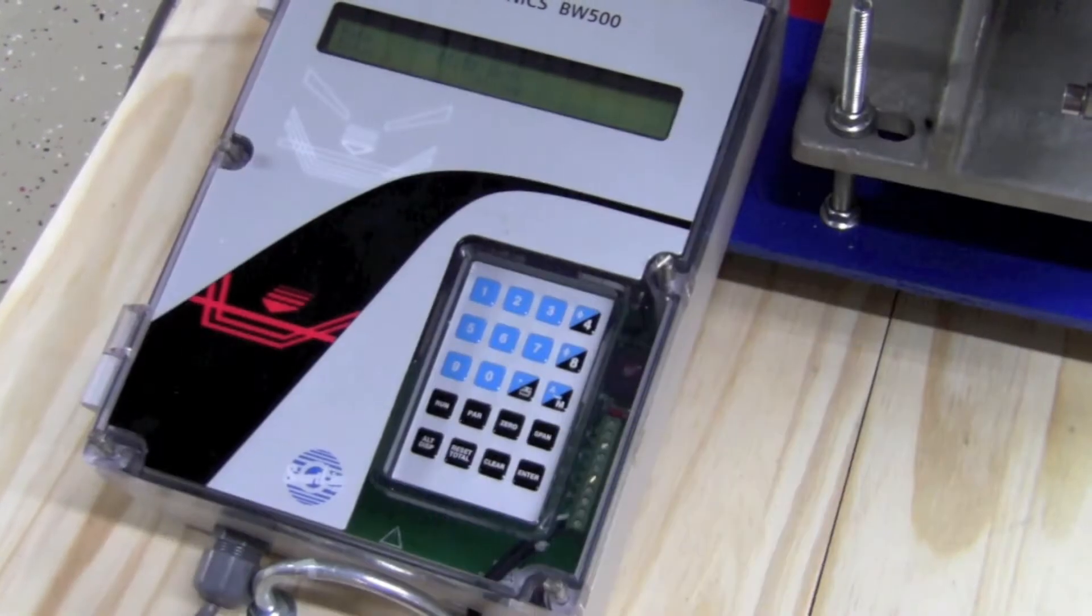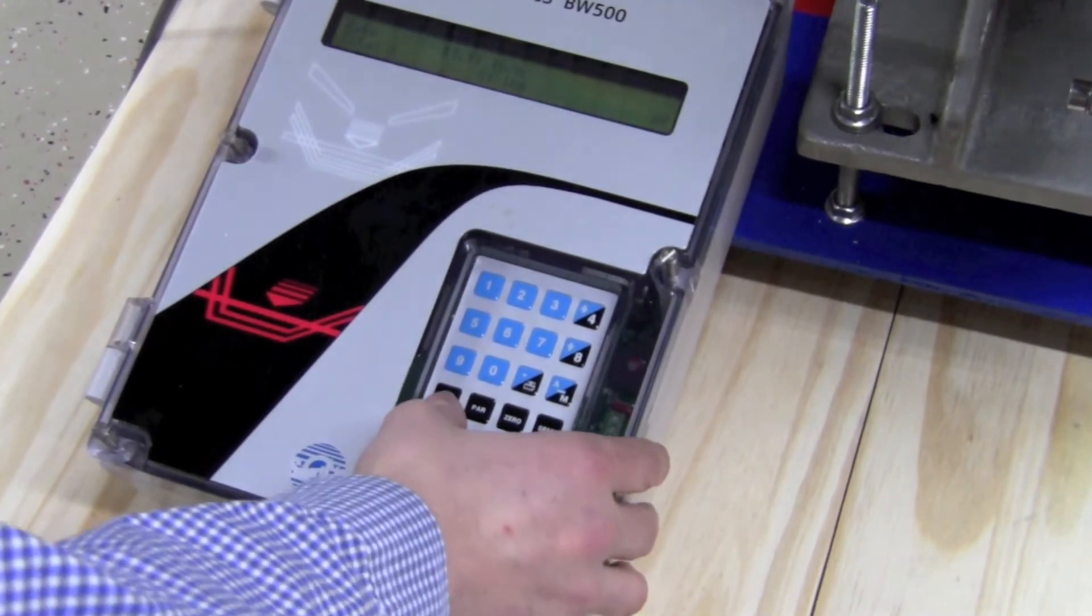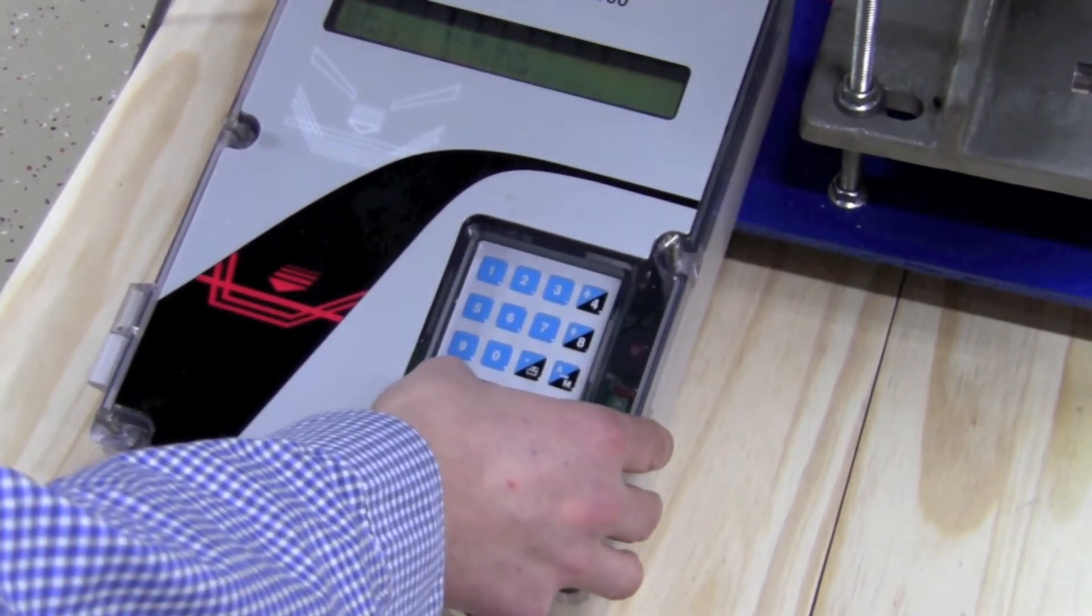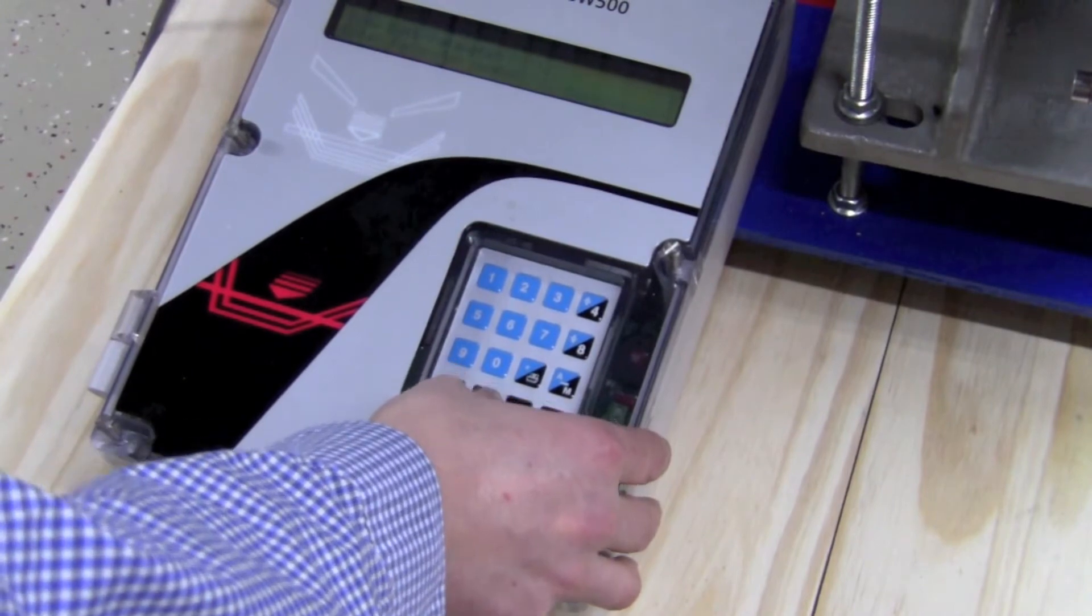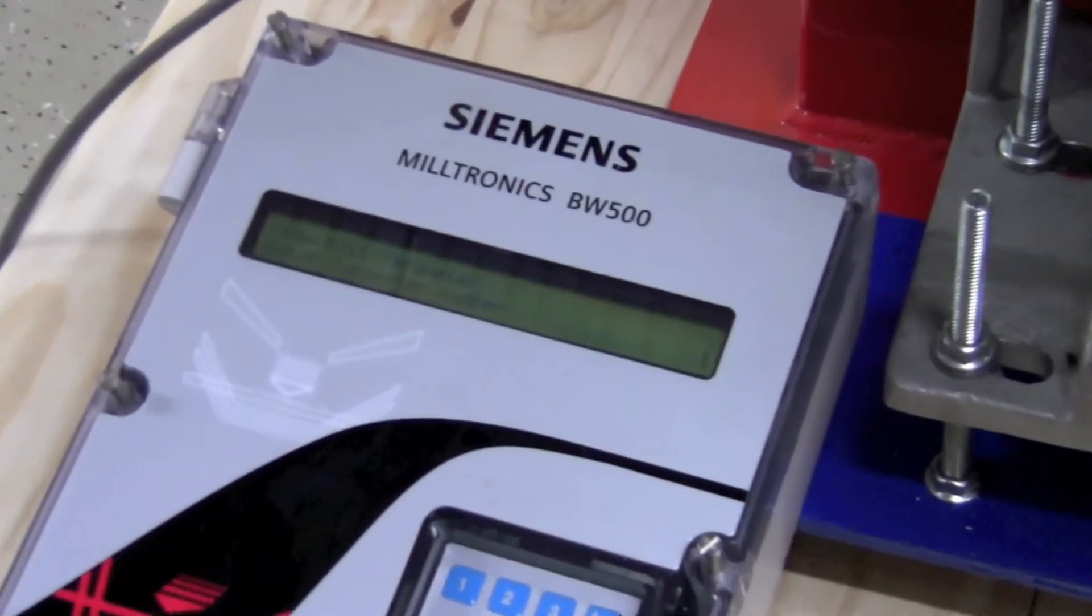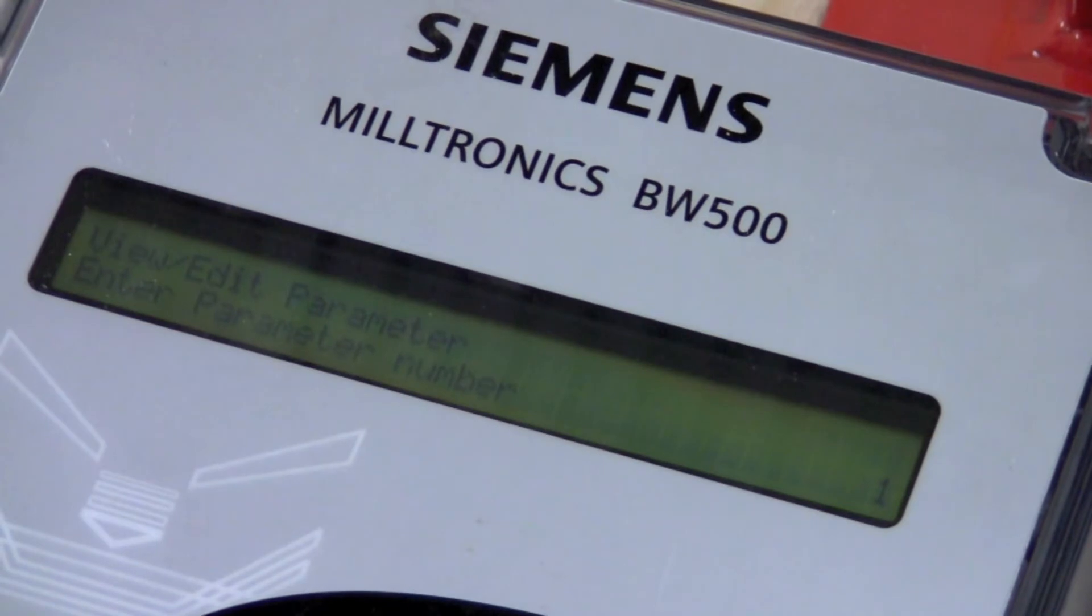A couple things to point out. When you're in run mode, if you want to change parameters, you will press PAR button twice, enter the parameter that you desire, and then press enter again.